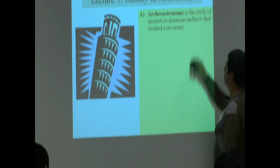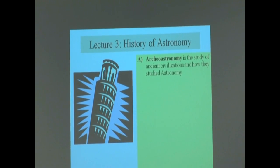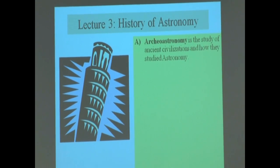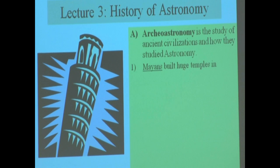Archaeoastronomy is the study of ancient civilizations and how they studied astronomy. So there's a whole branch of astronomy called archaeoastronomy, kind of like archaeology. So here are some examples.